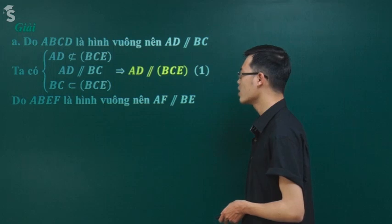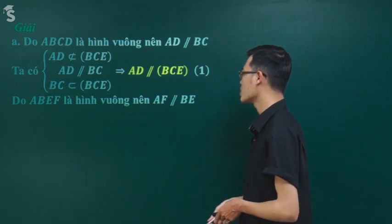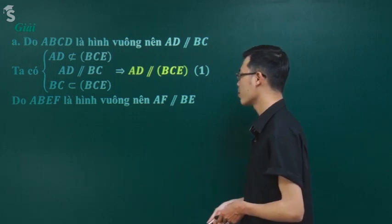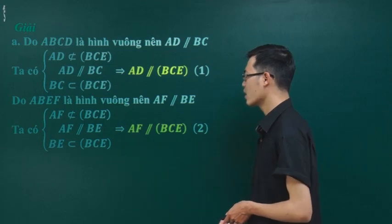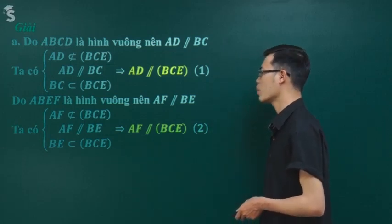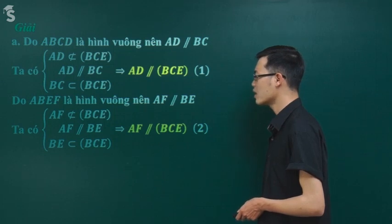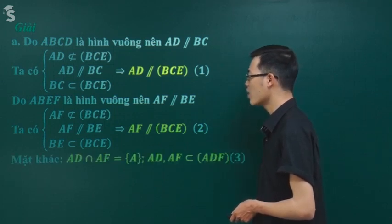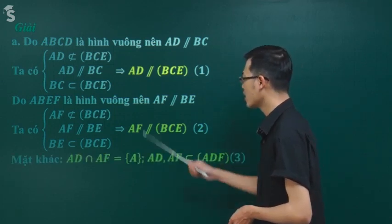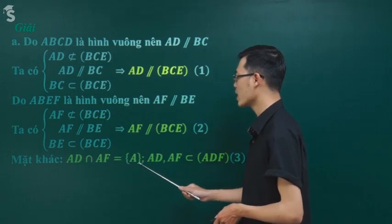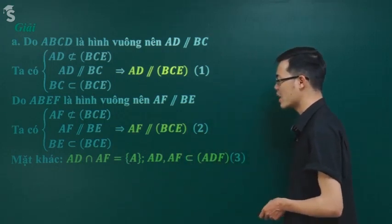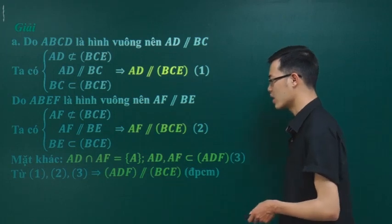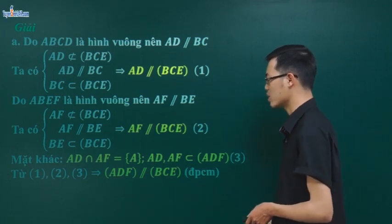Trình bày tắt thì chỉ cần ghi: AD song song BC, AF song song BE; AD và AF nằm trong mặt phẳng ADF; BC và BE nằm trong mặt phẳng BCE. Lắm khi dữ kiện hai đường cắt nhau và cùng nằm trong một mặt có thể bỏ qua nếu giáo viên không yêu cầu chặt chẽ. Nhưng trình bày đầy đủ thì phải ghi đúng cả 3 ý.